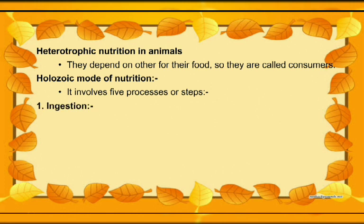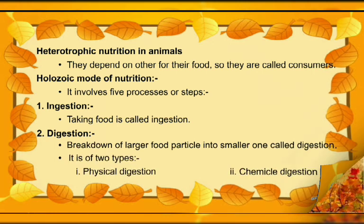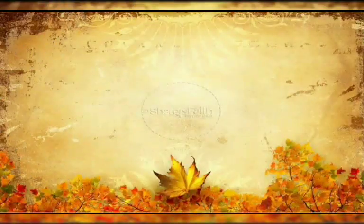Holozoic nutrition involves five steps. Number one is ingestion — taking food inside the body. Next is digestion — the food that is taken is broken down into smaller pieces; larger food particles are converted into smaller food particles. Digestion is basically two types: number one is physical digestion, number two is chemical digestion.